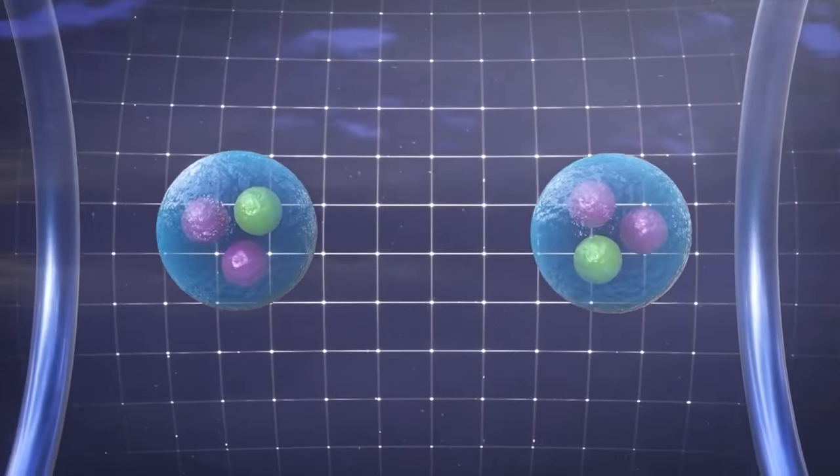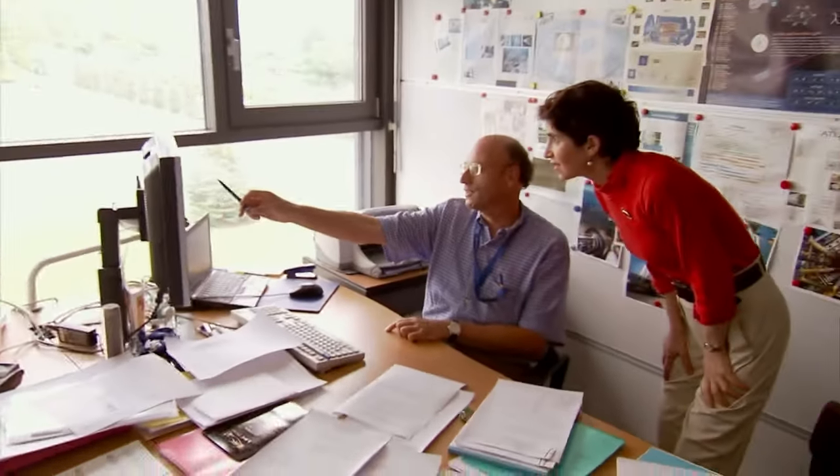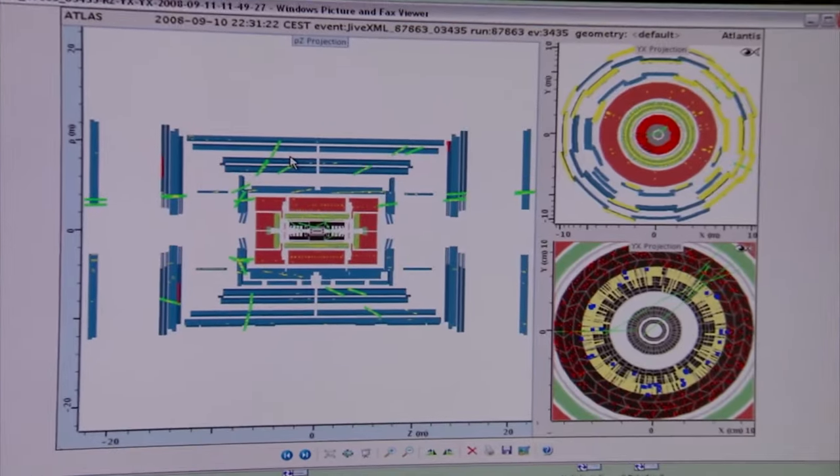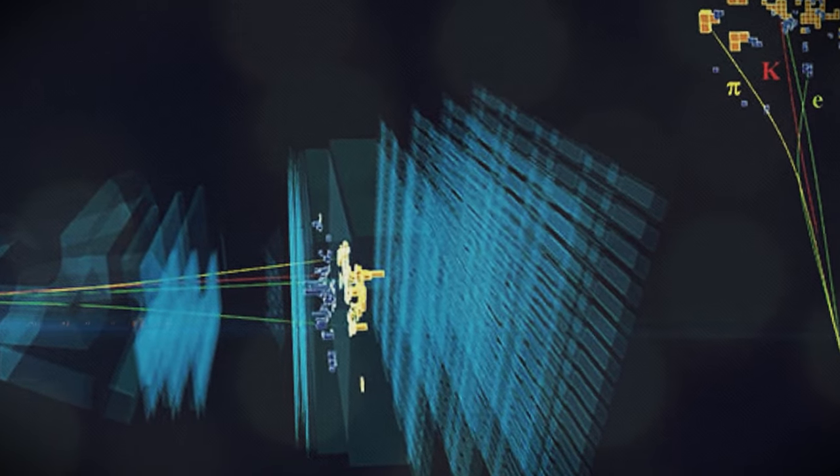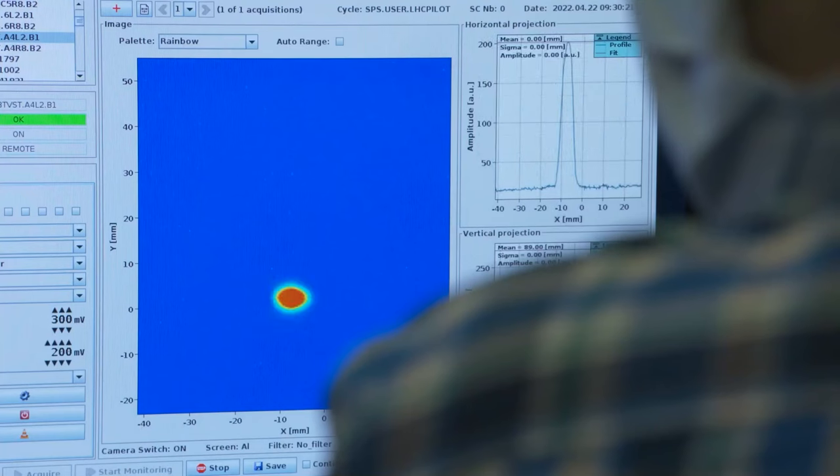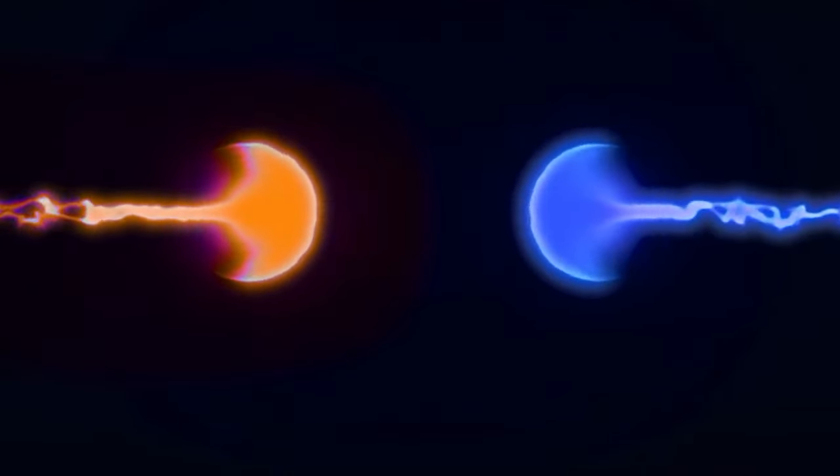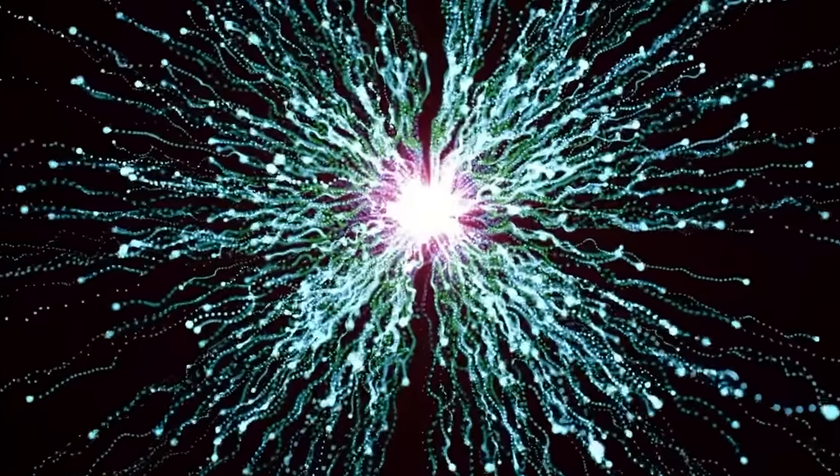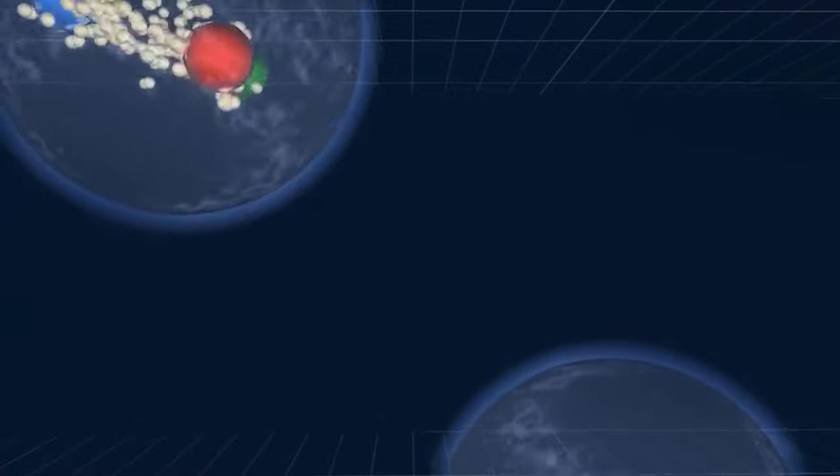However, the observed decay pattern did not align with these expectations. Contrary to what was expected, the data obtained from the Large Hadron Collider uncovered fascinating results. Particularly, the beauty quarks displayed a decay pattern that differed significantly from what was predicted. Instead of following the anticipated 50-50 ratio, the data indicated that these quarks decayed into muons approximately 70% more frequently than into electrons.